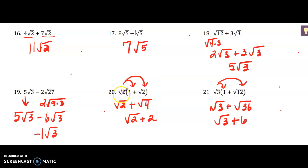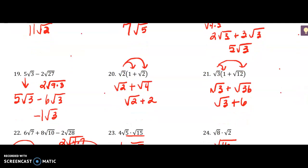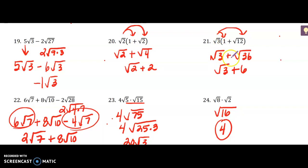Number 20: you're using your distributive property. The square root of 2 times 1 is the square root of 2; the square root of 2 times the square root of 2 is the square root of 4, which is just 2. So it's the square root of 2 plus 2, and those cannot be combined. Number 21: same thing, use the distributive property. The square root of 3 times the square root of 36 — the square root of 36 is exactly 6, so I simplified that.